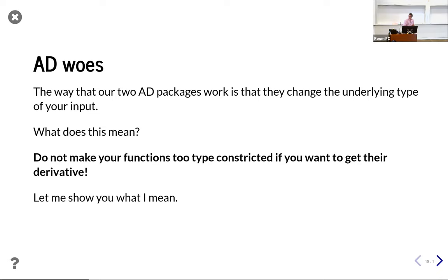This happens because people clench too hard on what they think their input should be. And it's not always your problem — sometimes it's somebody in a package who has said 'I only accept Vector{Float64}', which you don't want to do. Question from the audience: when defining a struct with type declarations, that was breaking auto-diff, and the advice was to use an abstract type. Yes — using parametric typing is the better way to handle this.